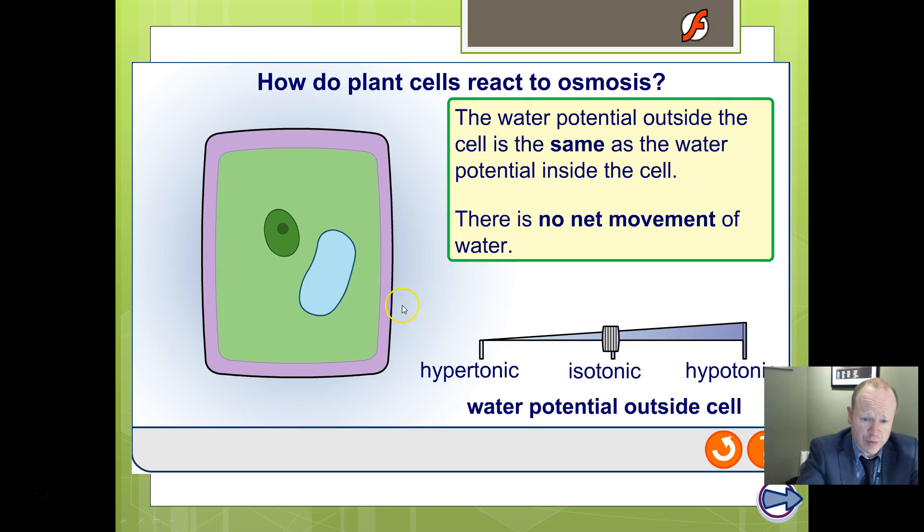Here's our diagrammatic representation of a plant cell. Cell wall, the purple area here. This is the vacuole. Remember that's a membrane-bound sac. So this is a cell membrane. This will be the nucleus. So this will be the cytoplasm.